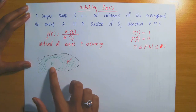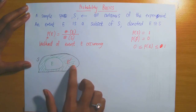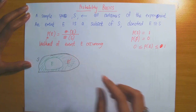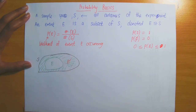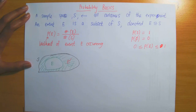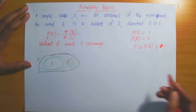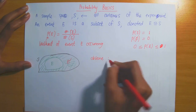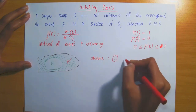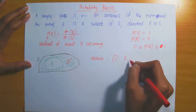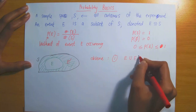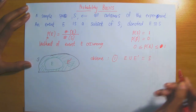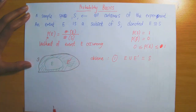Observe that both E and E complement, where E complement denotes everything that's not in E, when added together give you the entire sample space. Using set notation, E union E complement is equal to the entire sample space S.